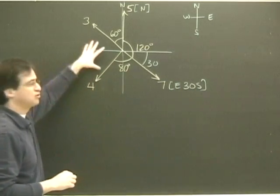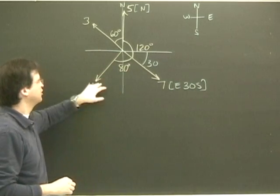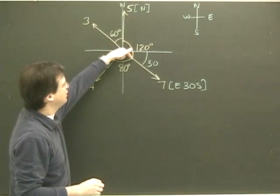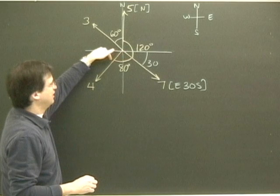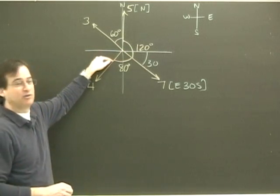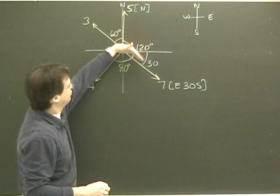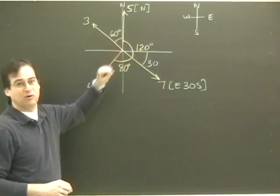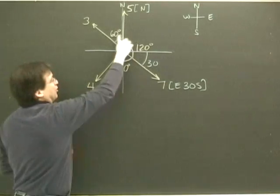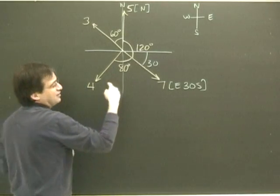That leaves me with two more to work with. Let's look at the 4. What I'm going to do is, I've got 120 here from the 5, and an 80 there, so 120 and 80 is 200 degrees. So I have 200 degrees around this way from north.